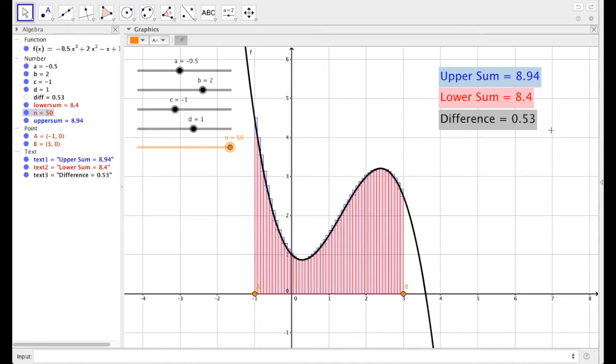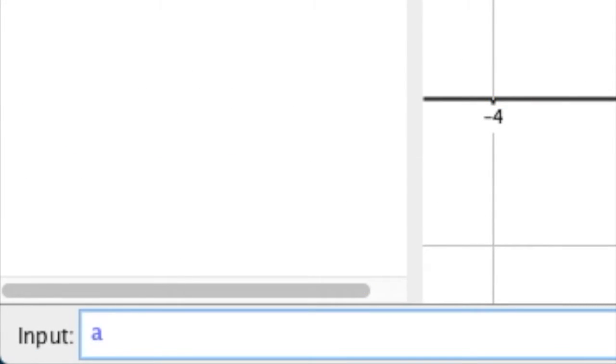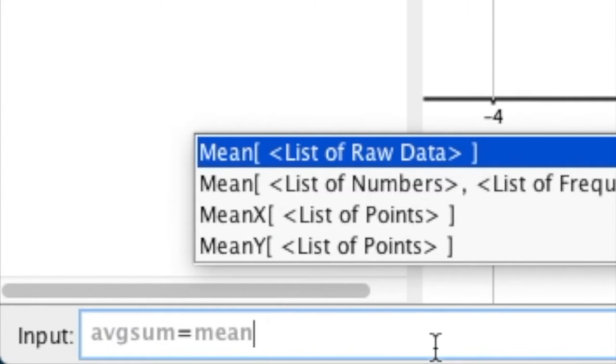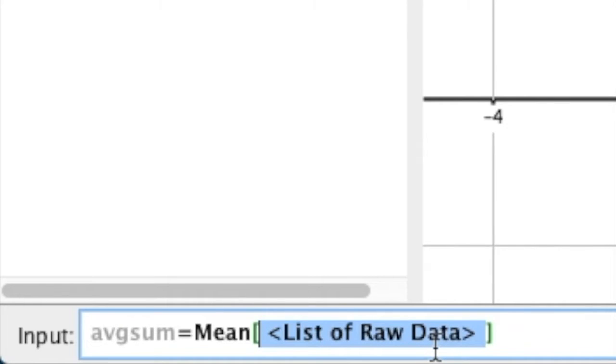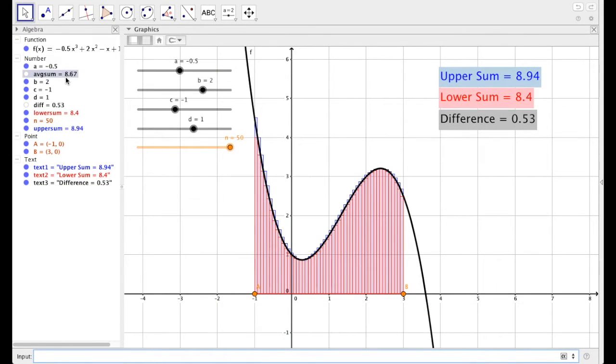Yeah, we could average these two methods. So let's do that. Let's call something the average sum. So just avg sum is, and it's going to be the average of upper sum and lower sum. What's the statistical way of averaging? It's the mean. So let's type in mean. Pick that first option. So mean of, and I'm just going to type in our variable upper sum. Notice it's blue, comma, lower sum. Notice again, it turns blue. And press enter. And there's our average of the two sums. So let's put this text on.